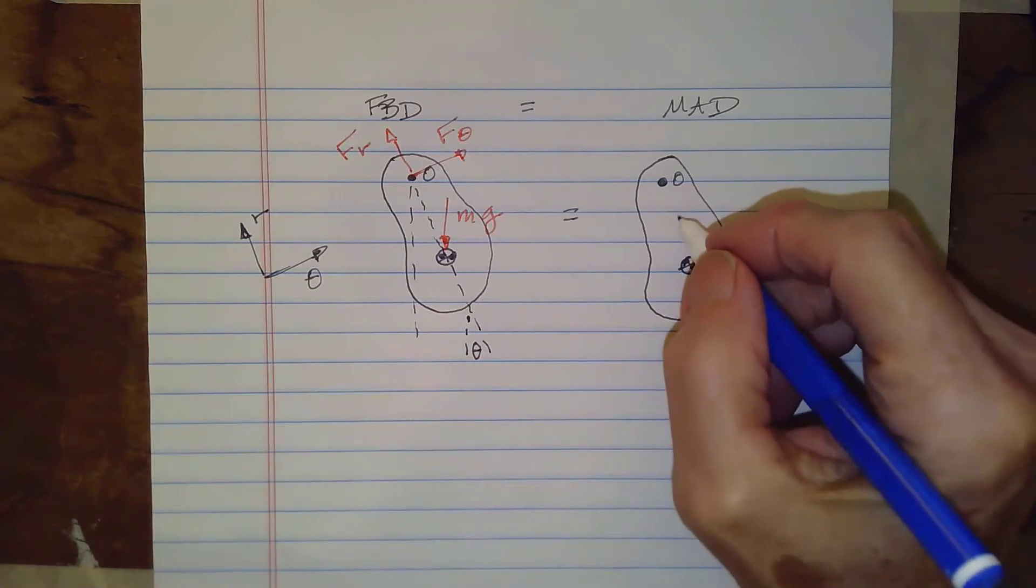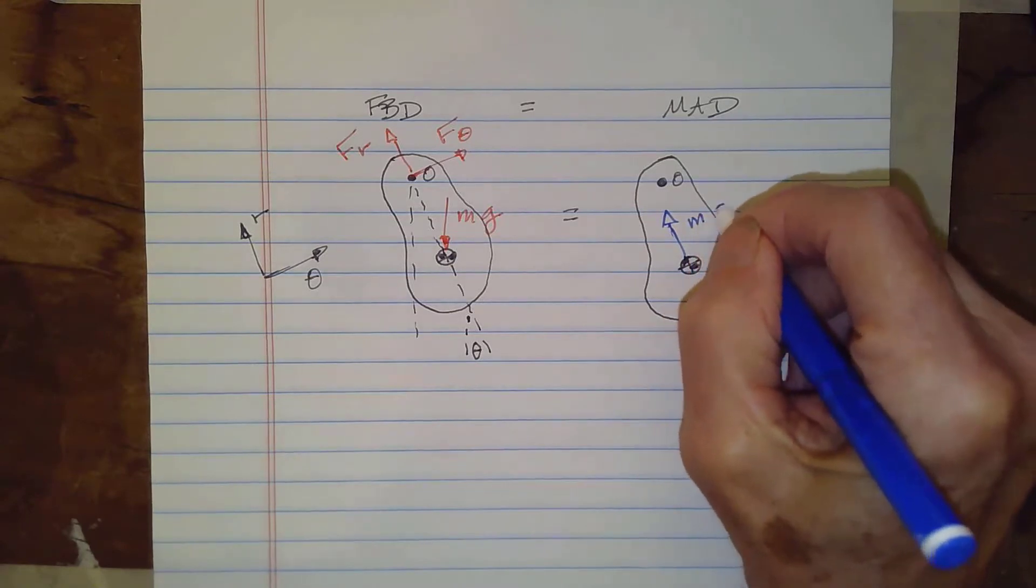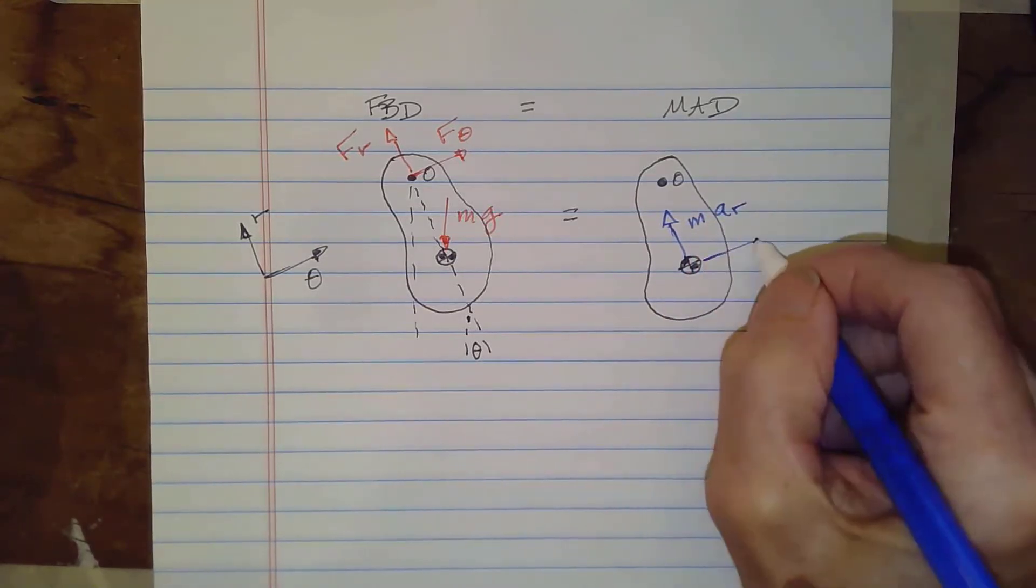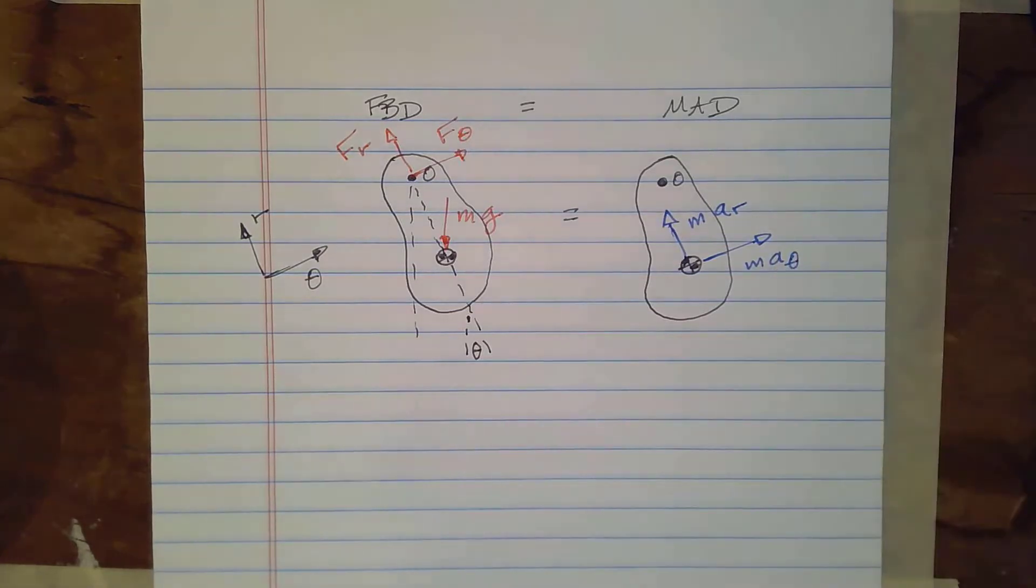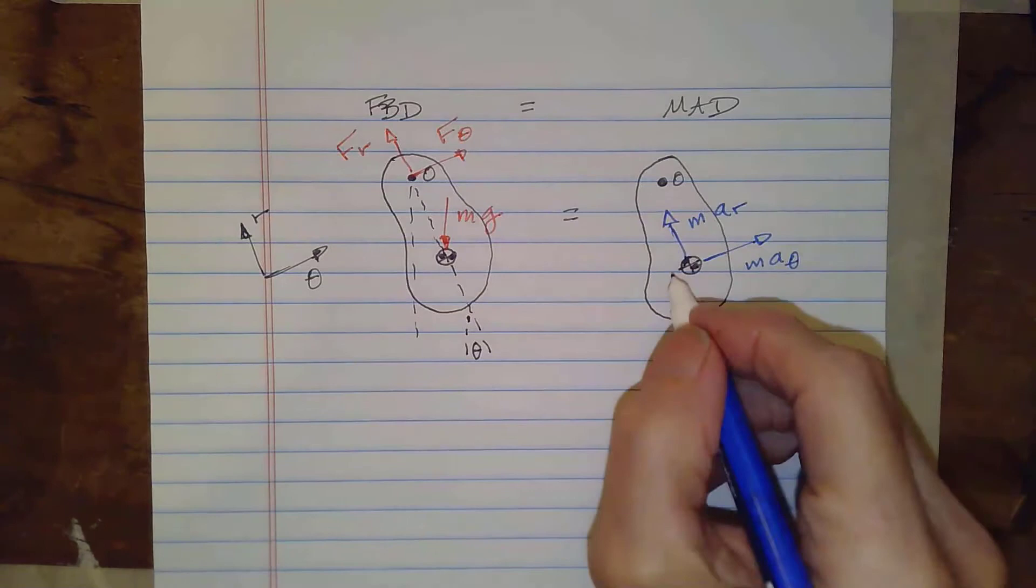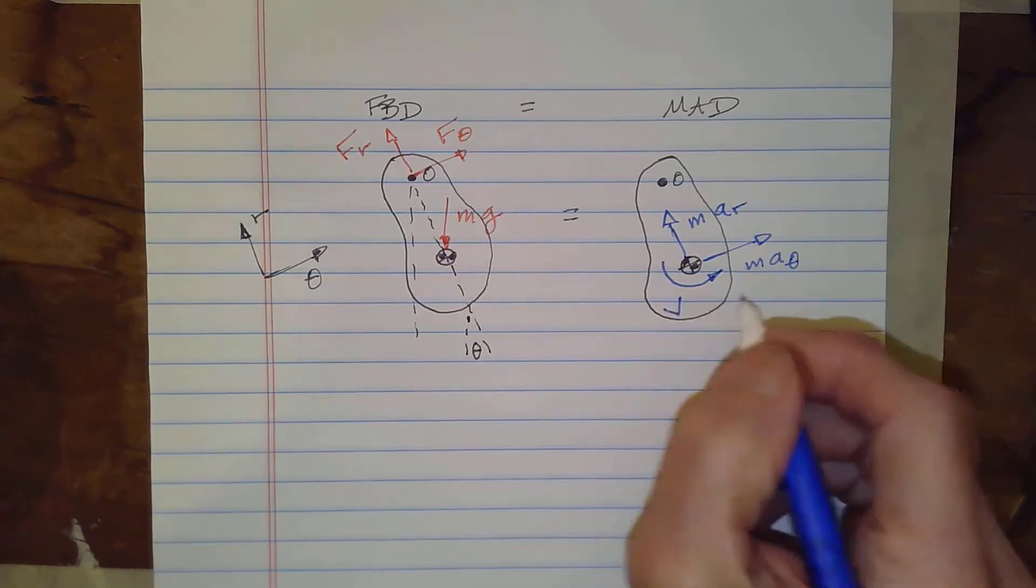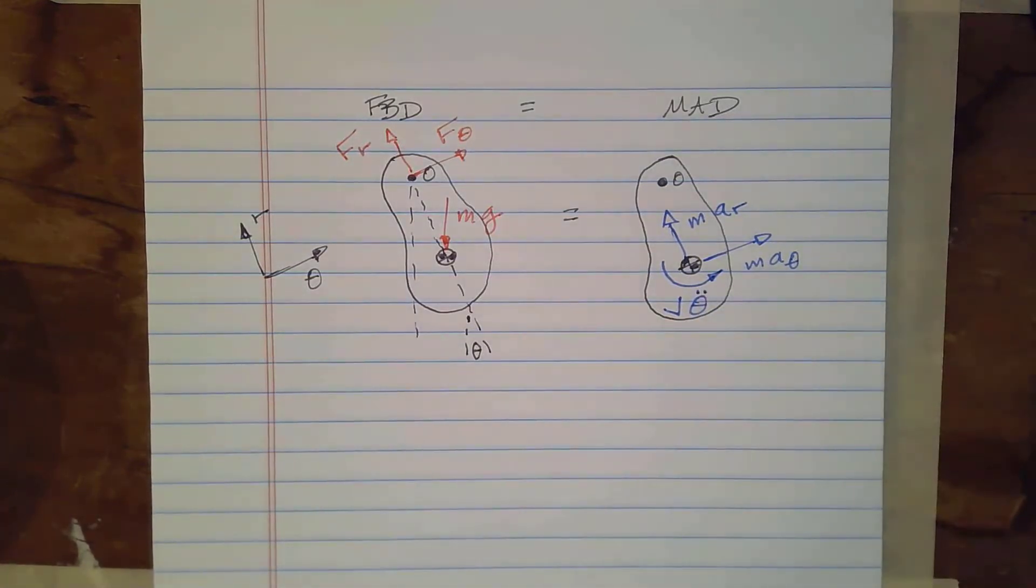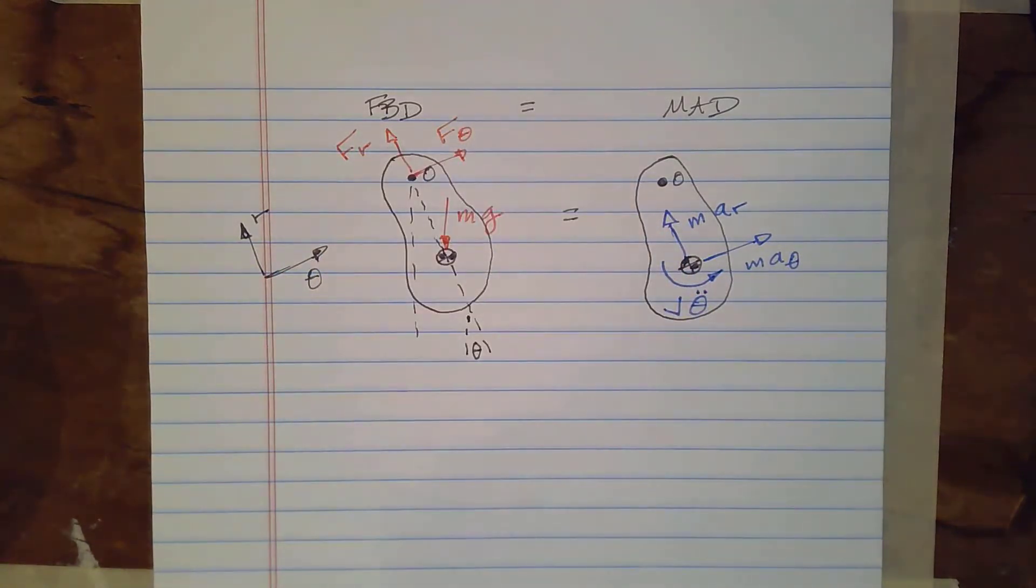Now on the MAD you do everything at the mass center as always so we draw a MA vector here and this will be M A R and then this is M A theta but the other thing because we have the resistance to rotation we actually have to have a rotational vector here and this is going to be J times theta double dot.